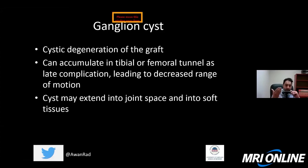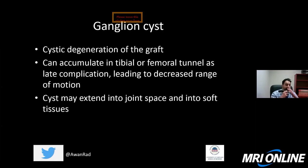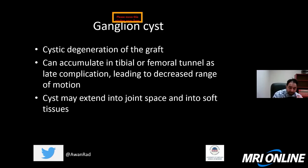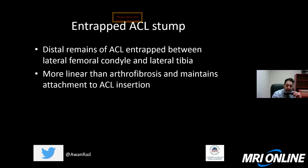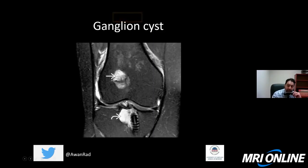Ganglion cyst or tibial tunnel syndrome refers to cystic degeneration of the graft, with T2 hyperintense cystic signal within the tunnel. It can occur in the tibial or femoral tunnel, more commonly the tibial tunnel. This is usually a later complication — it typically happens two or three years after ACL graft reconstruction. It usually stays confined to the tibial tunnel, but can extend into the joint space and soft tissues, sometimes looking quite aggressive. Ganglion cyst or tibial tunnel syndrome can result in pain and decreased range of motion.